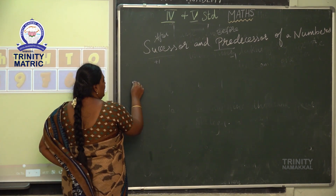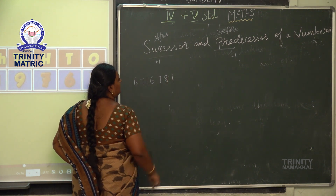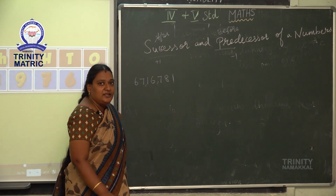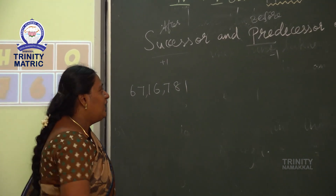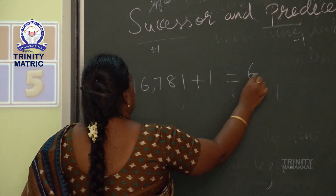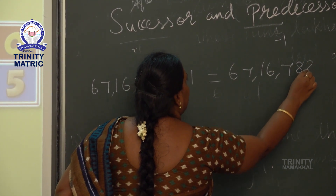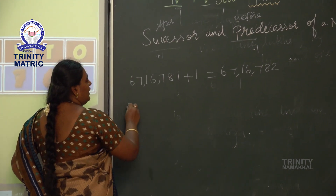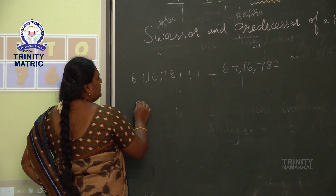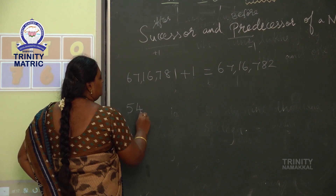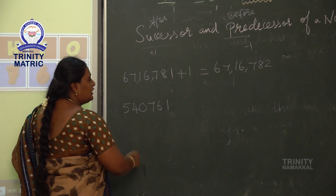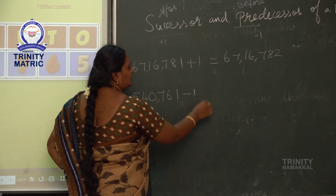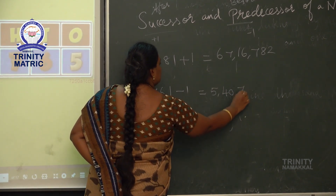For example, tell me any 7-digit number — say 6,716,781. What is the successor of this number? Successor means the next number, so we add 1. That equals 67 lakhs, 16,782. We are adding just 1, so 1 plus 1 is 2. Now what is the predecessor? Predecessor means we subtract 1 from the given number. For example, 5 lakhs, 40,761 — the predecessor is 5 lakhs, 40,760.